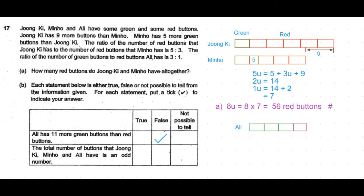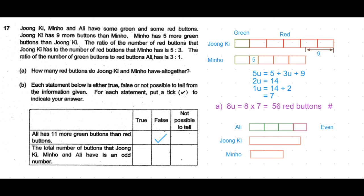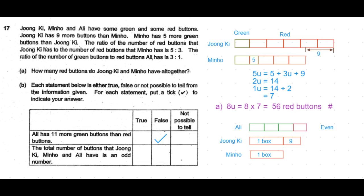The second statement is: the total number of buttons that Junki, Minho and Ali have is an odd number. Ali has four units of buttons total, which must be even as it's a multiple of four. For Junki and Minho, if we call Minho's total one box, then Junki has one box plus nine, making their combined total two boxes plus nine. Two boxes is always even — whether one box is even or odd, two times it is always even.